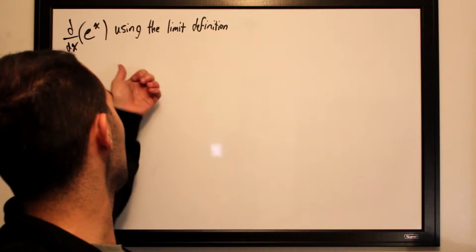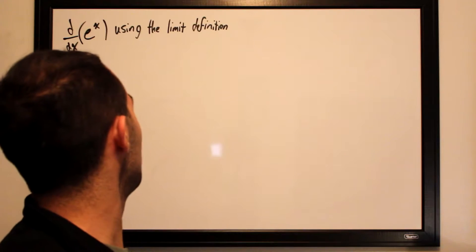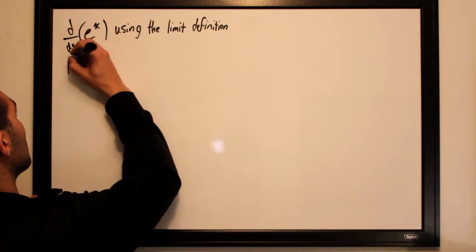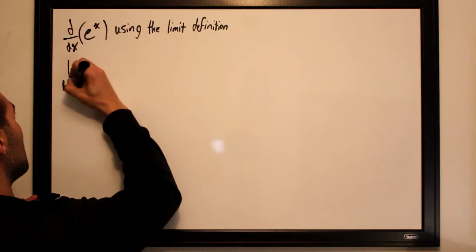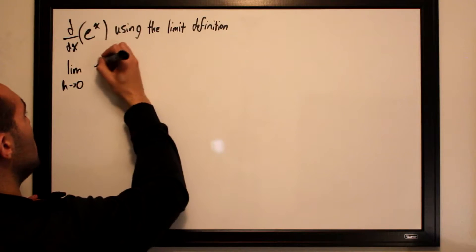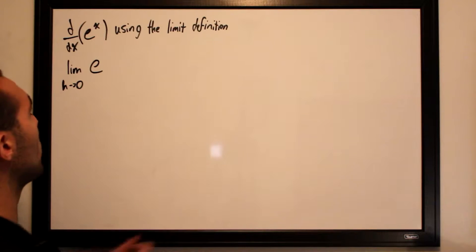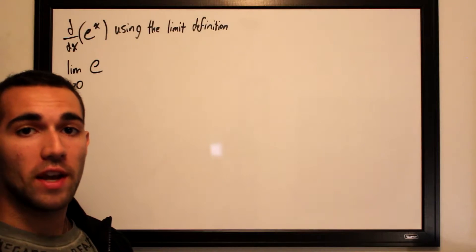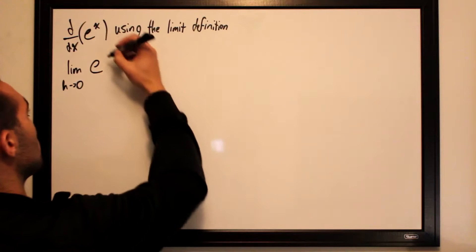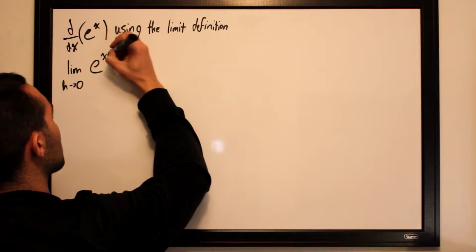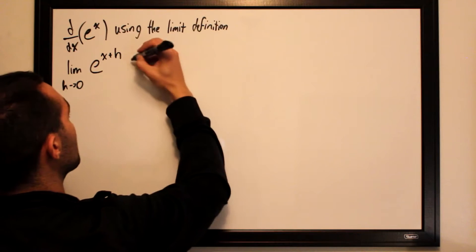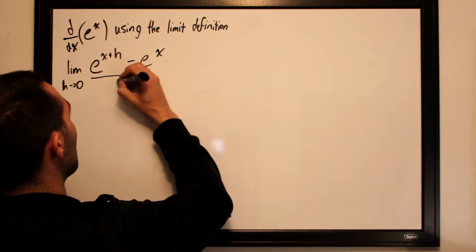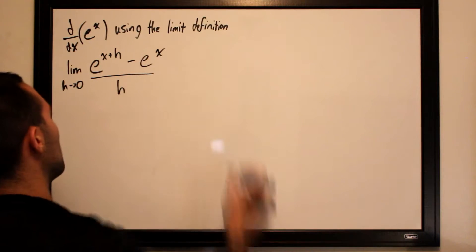So if we wanted to take the derivative of e to the x, we would set this up by taking the limit as h approaches 0. Wherever we see x in our initial function, we substitute in x plus h. So this will be e to the x plus h, minus e to the x, all divided by h.